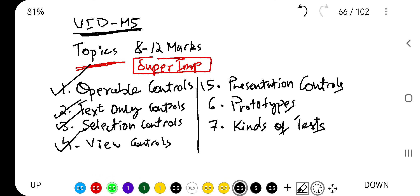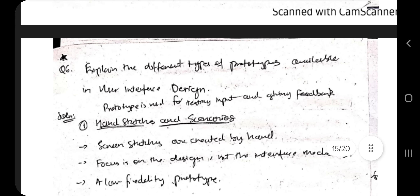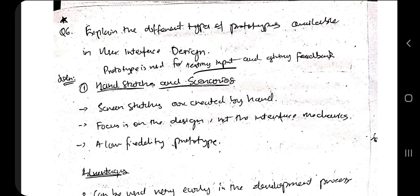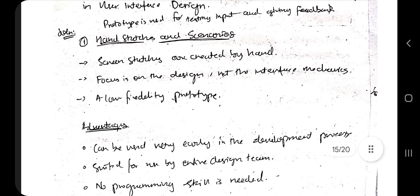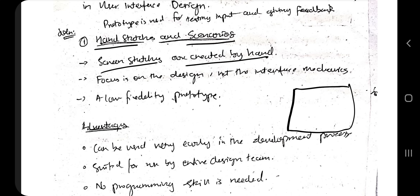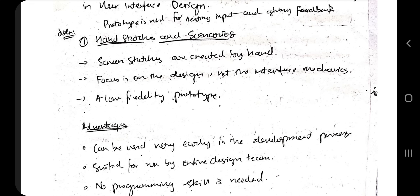Moving to the second chapter: prototypes and kinds of tests. We need prototypes to check how well a designed feature takes input and gives feedback. One type is hand sketches and scenarios — screen sketches created by hand where you design a scenario and test it yourself, providing input and getting feedback.